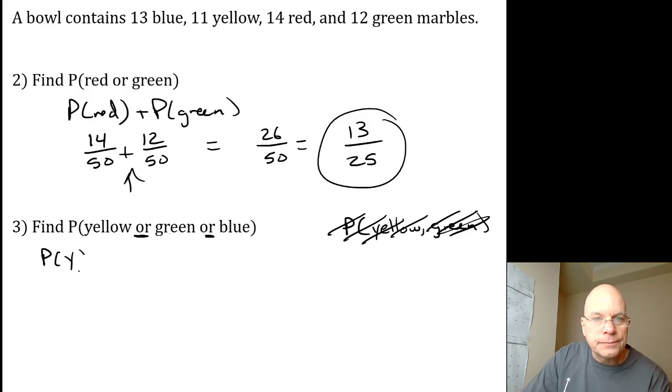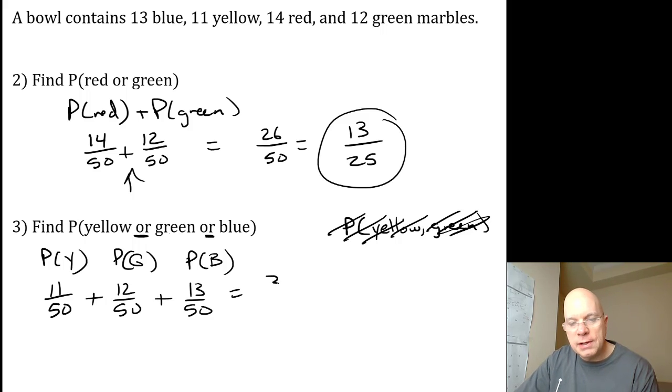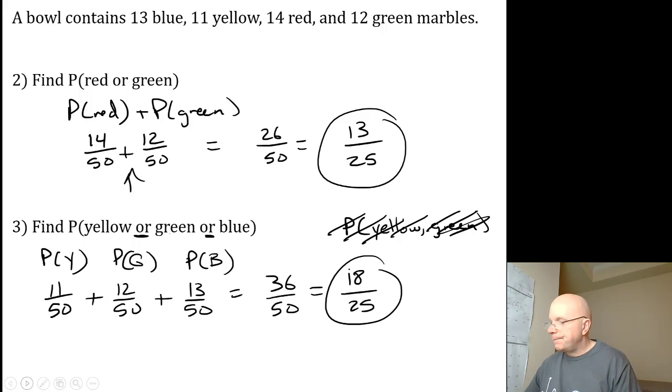So the probability of yellow is 11/50, the probability of green is 12/50, probability of blue is 13/50, for a total of 36/50, which is 18/25. Read the directions for the next one carefully and try it on your own first.